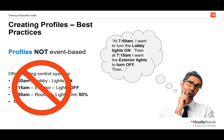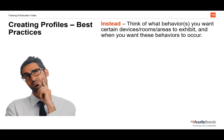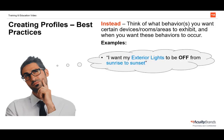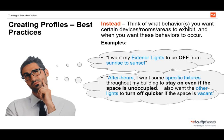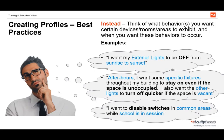Instead, think about the behaviors or operation you want certain devices, rooms, or areas to exhibit, and when you want to see these behaviors. For example: I want my exterior lights to be off from sunrise to sunset. Or, after hours, I want specific fixtures to stay on even if the space is unoccupied, and other lights to turn off quicker if the space is vacant. Or, I want to disable switches in common areas while school is in session.